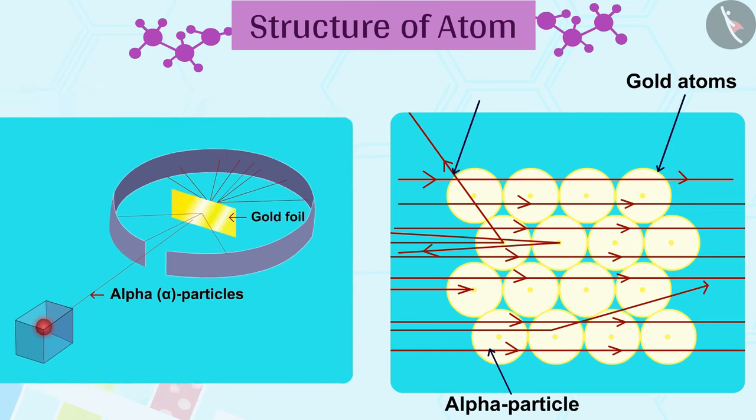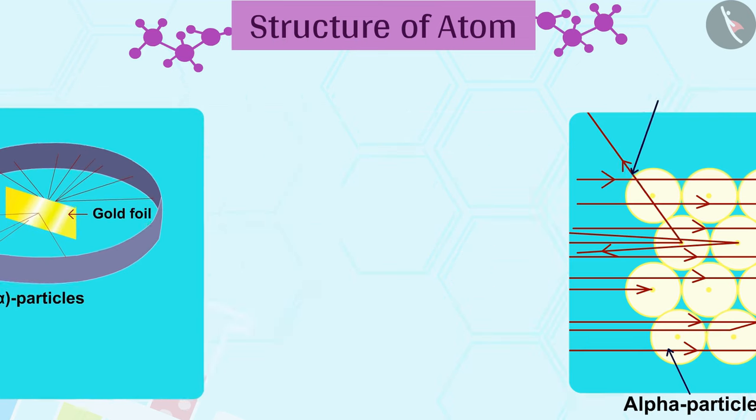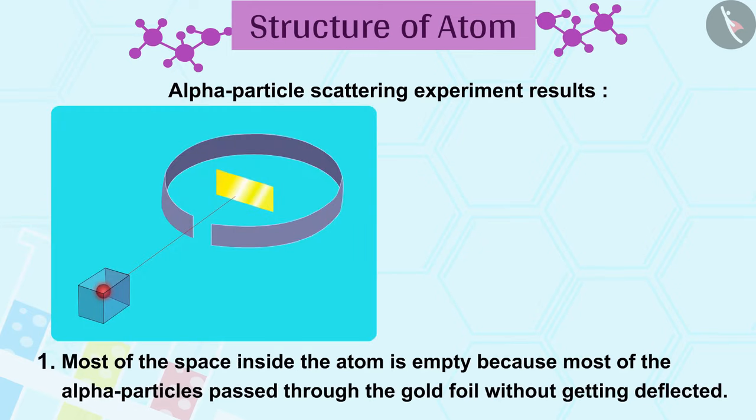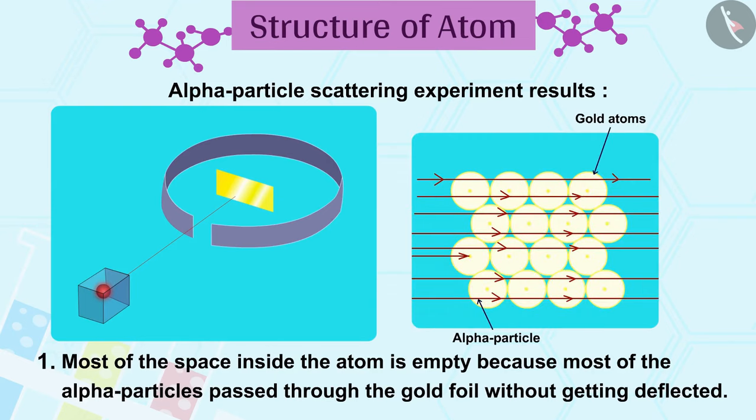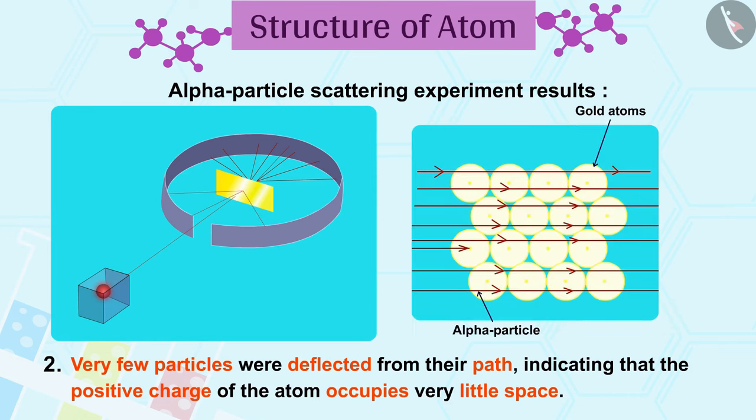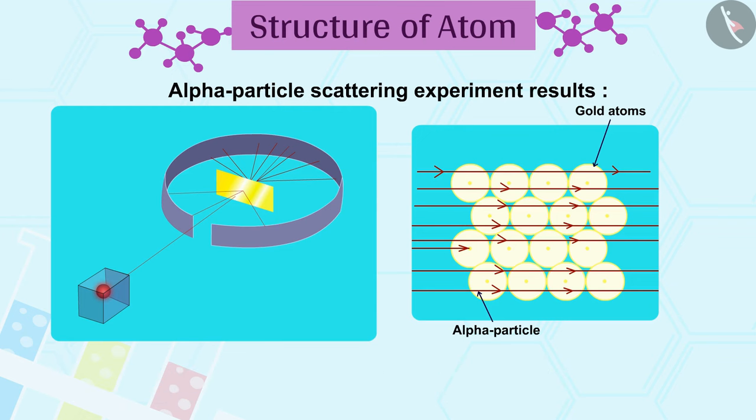Rutherford derived the following results based on the alpha particle scattering experiment. Most of the space inside the atom is empty because most of the alpha particles passed through the gold foil. Very few particles were deflected from their path, indicating that the positive charge of the atom occupies very little space.